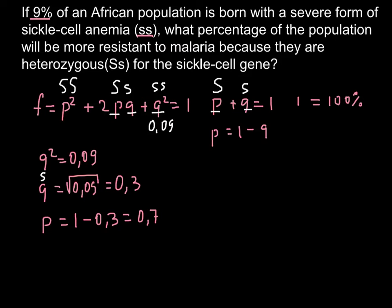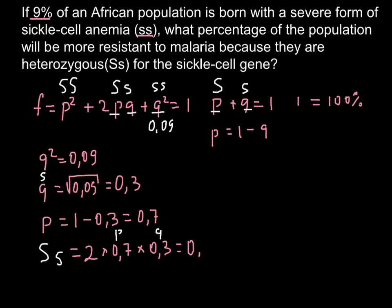Now we can calculate the middle part of the formula and find our answer. To find the heterozygous genotype frequency (Ss), we multiply 2 by p (0.7) and then by q (0.3). So 2pq = 2 × 0.7 × 0.3 = 0.42. This is the frequency of the heterozygous genotype.